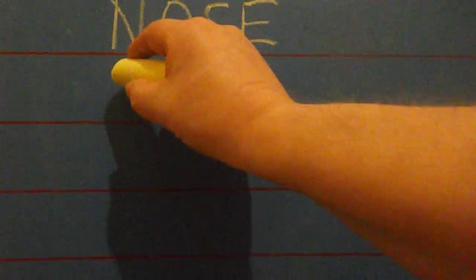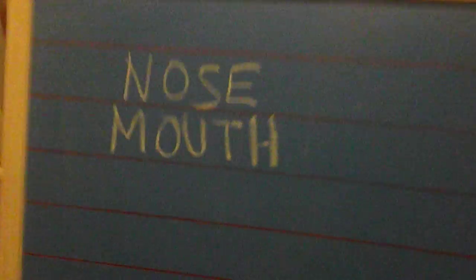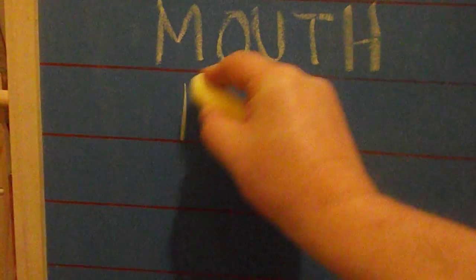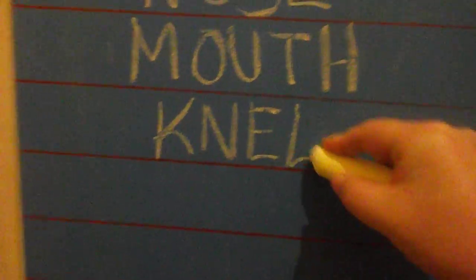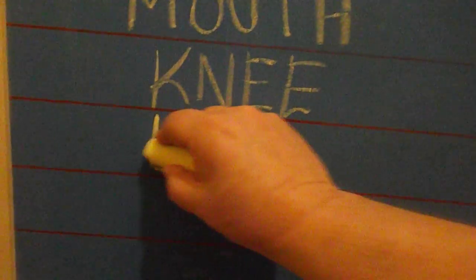Here's your first word — you have to tell me what part of the body that is. What is it? That's your nose, you're right, it's your nose. Next part of your body — what's that? That's your mouth, you're right, your mouth is correct. Next one — this part of the body here. Yeah, that's your knee. Where's your knee? Right there, yeah. Okay, next one — eye. What is it? That's your eye, yes, that's correct.